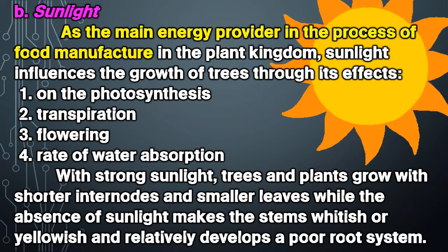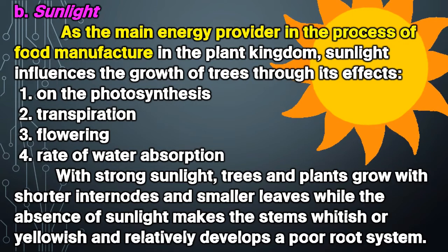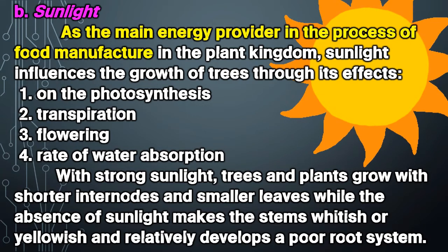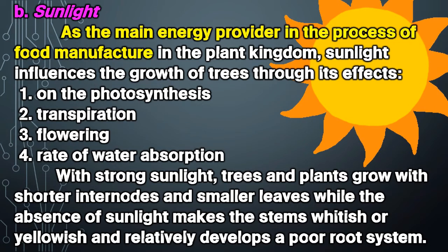Sunlight affects: 1) photosynthesis, 2) transpiration, 3) flowering, and 4) rate of water absorption. With strong sunlight, trees and plants grow with shorter internodes and smaller leaves, while the absence of sunlight makes the stems white.